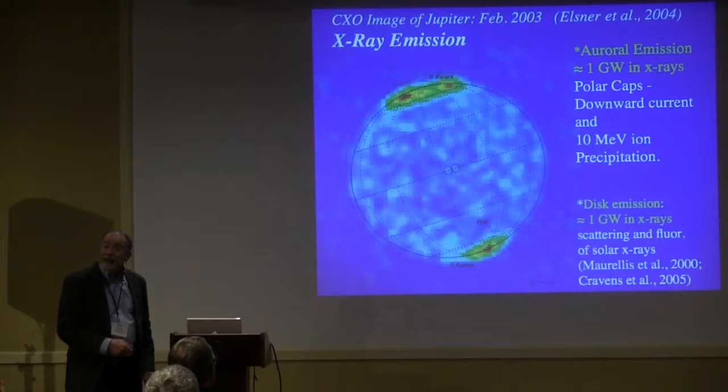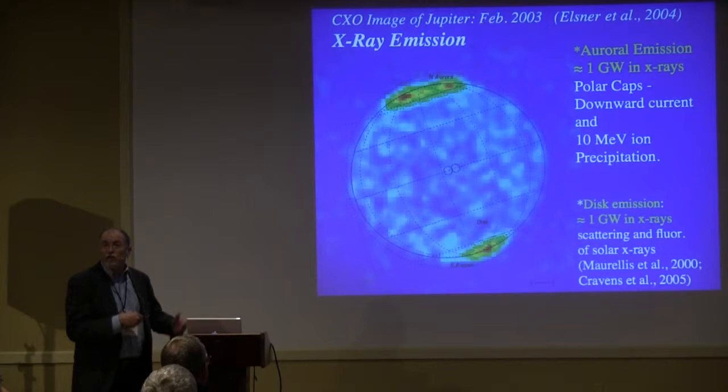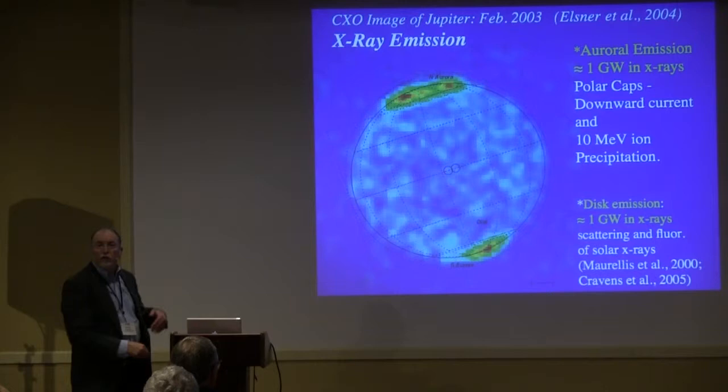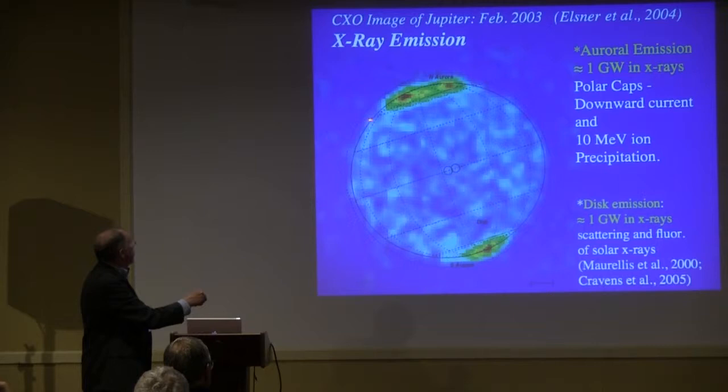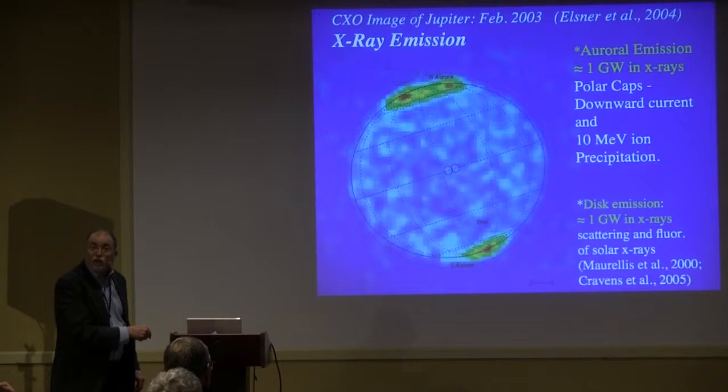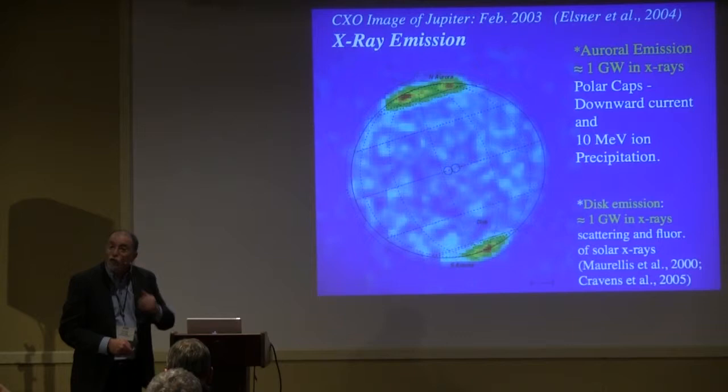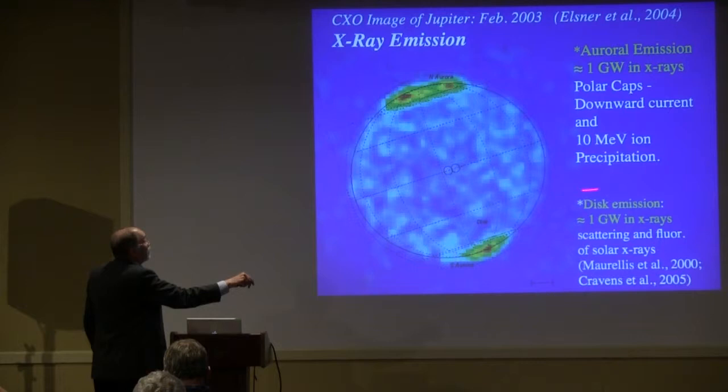There's disk emission — that's basically scattered solar X-rays, about a gigawatt. Not terribly interesting for our current purposes. And here is the auroral emission, again up in the polar cap. Here's the main oval down here, very time variable. Gladstone saw a 40-minute periodicity in his observations, which Melissa showed — the sort of blinking light effect, which is interesting. About a gigawatt. We're going to interpret it as being due to 10 MeV ions.